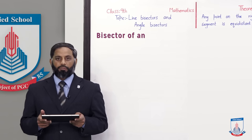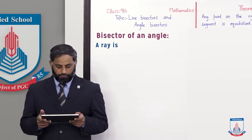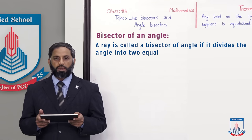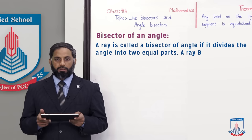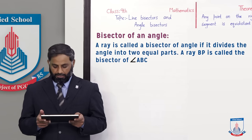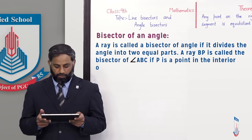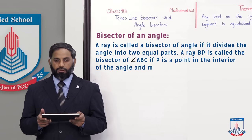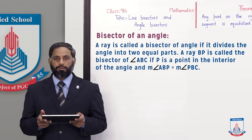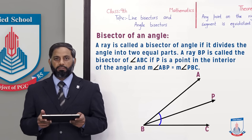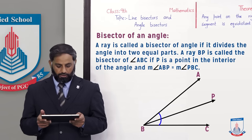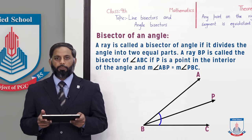Now let's understand the definition of bisector of an angle. A ray is called a bisector of an angle if it divides the angle into two equal parts. Ray BP is called the bisector of angle ABC if P is a point in the interior of the angle and measurement of angle ABP is equal to measurement of angle PBC, as you can see in the figure.